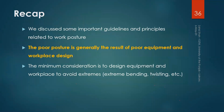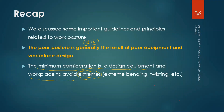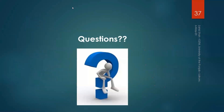In this segment we discussed important guidelines and principles related to work posture. The key takeaway is that poor posture is generally the result of poor equipment and workplace design — people do not habitually adopt poor posture on their own. The minimum consideration is to design equipment and workplaces to avoid extremes: extreme bending, extreme twisting, and extreme restricted postures. From there, we can move toward the ideal situation.